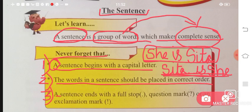Then third point says a sentence ends with a full stop, question mark or an exclamation mark. You must put one of these three at the end of a sentence - it is compulsory.